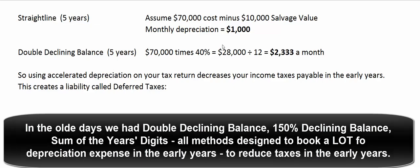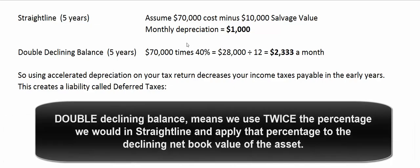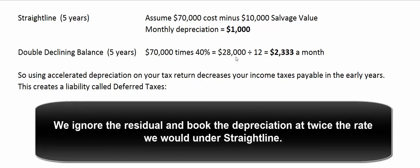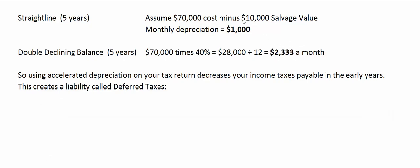Let's talk about double declining balance. Same asset — we spent $70,000 on it. With this method we ignore the salvage value at first. Under straight-line, 100% divided by five years means we'd book 20% per year. Since this is double declining balance, we take 40% times $70,000. Our first year's depreciation will be $28,000, which is $2,333 a month. So we'd have a big depreciation expense on our tax return, a smaller one on our books, and the difference is called deferred taxes.